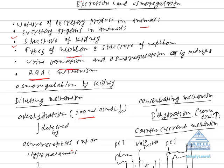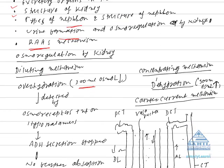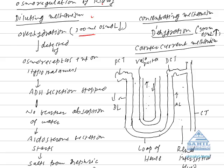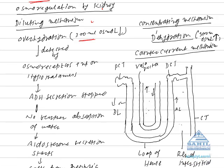Now see how hypotonic urine is formed. This mechanism of urine formation is called the diluting mechanism. In this case, urine is diluted, meaning a urine will be produced whose osmotic concentration is less than 300 milliosmol.